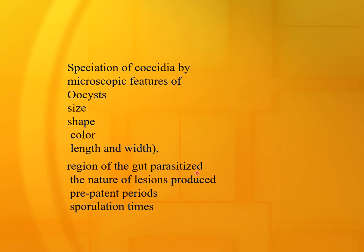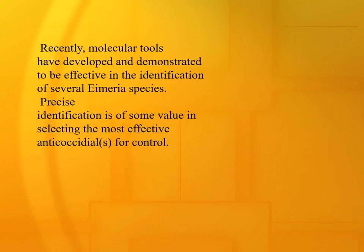Additional speciation criteria include: region of the gut parasitized, the nature of the lesion produced, pre-patent period, and sporulation time. All these help in the classification of coccidia. Recently, molecular tools have been developed and demonstrated to be effective in the identification of several Eimeria species. Precise identification has value in selecting the most effective anticoccidial for control.